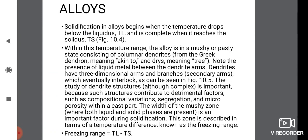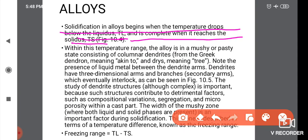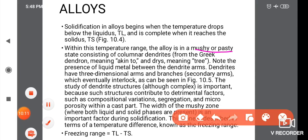Next, alloys. In alloys, the solidification process is different from pure metals. The solidification in alloys begins when the temperature drops below the liquidus temperature TL and is complete when it reaches the solidus temperature TS. In between, there is a mushy or paste state. Here we see the dendritic structure.